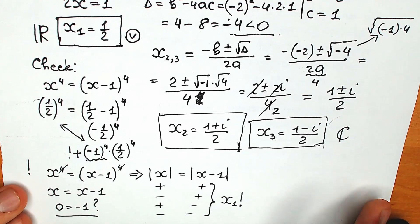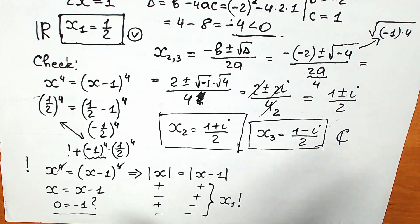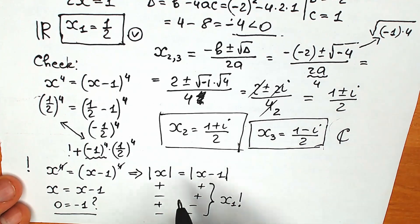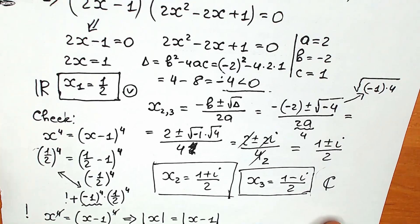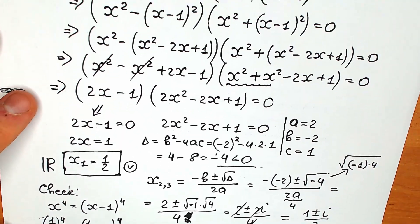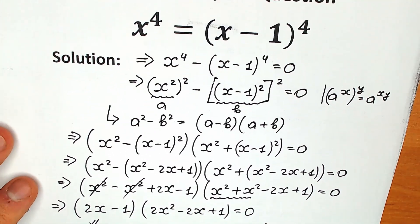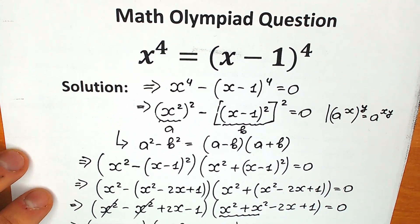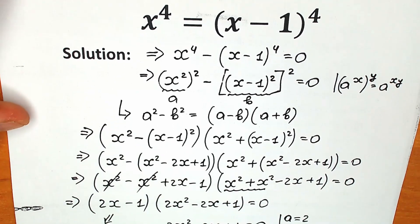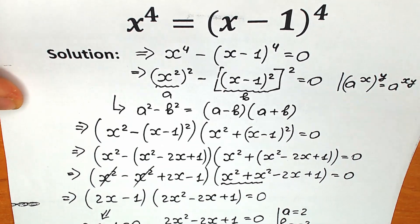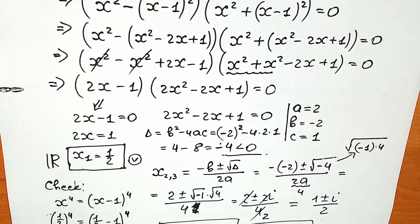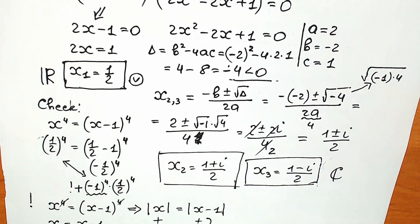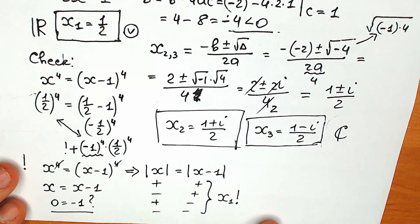This is my complete solution: one real root x₁ equals one half, and two complex roots x₂ and x₃. This is a full solution to the question. I really hope you understand it and learned something new. Write your thoughts and responses in the comments below.